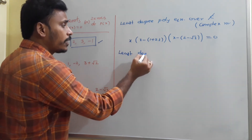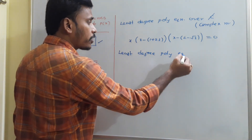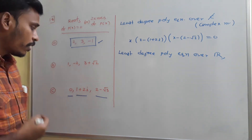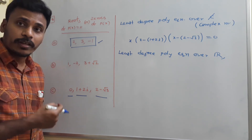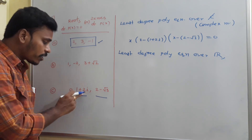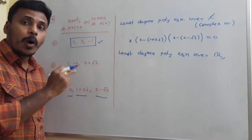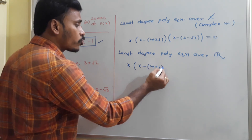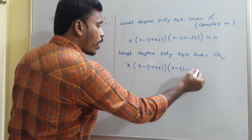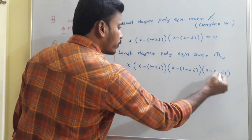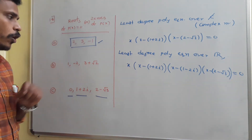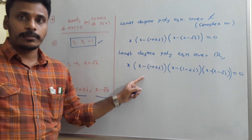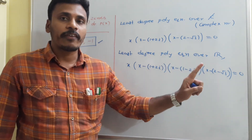For the least degree polynomial equation over real numbers: since 1+2i is a root and the coefficients are reals, then 1-2i is the other root. So the equation is x·(x-(1+2i))·(x-(1-2i))·(x-(2-√3)) = 0. Since the polynomial is over reals, 1+2i and 1-2i occur together, and 2-√3 won't affect the coefficients being real.